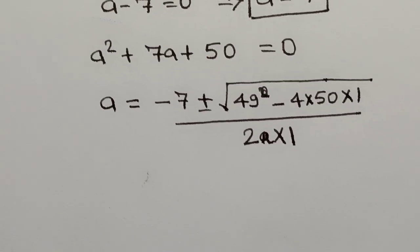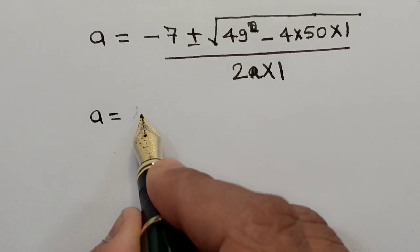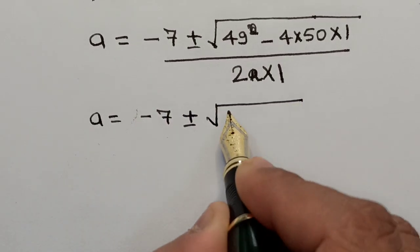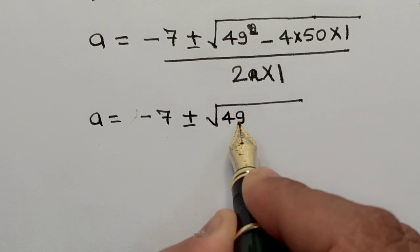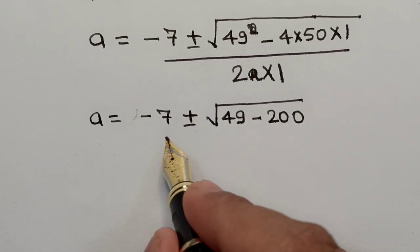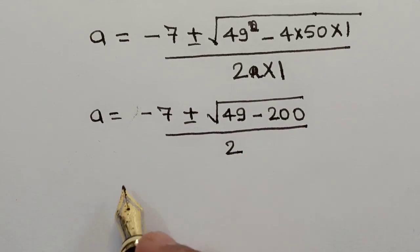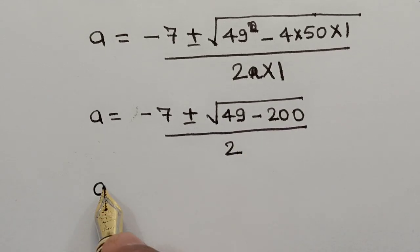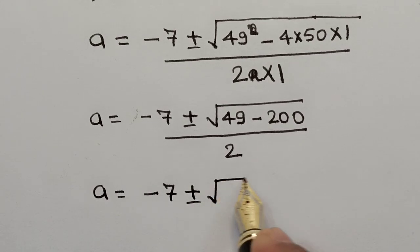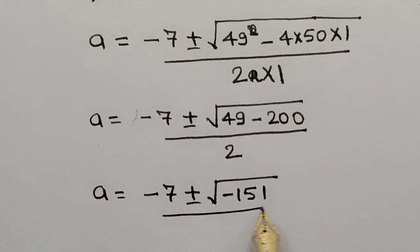Solving further, A = (-7 ± √(49 - 200)) / 2. Since 49 - 200 = -151, this becomes A = (-7 ± √(-151)) / 2.